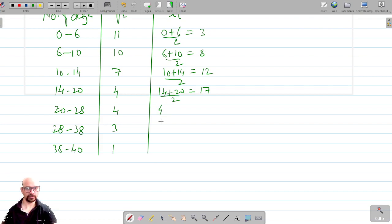Now 14 plus 20 divided by 2 is 17. Then 20 plus 28 divided by 2, which will be equal to 24.